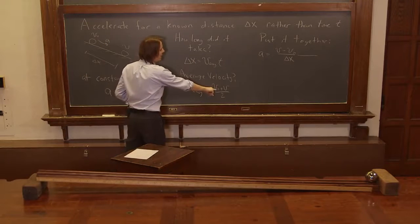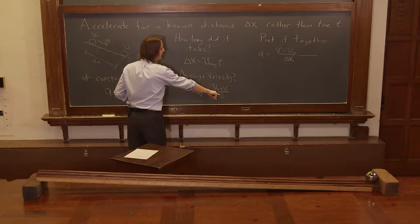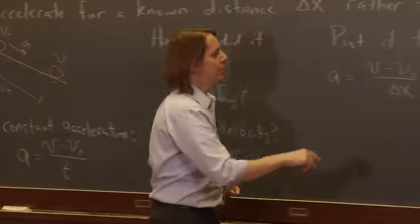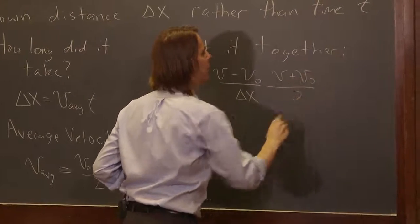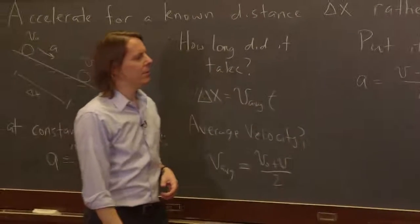And what is v average? It's v plus v-naught over 2. So I'm going to put it in the numerator, v plus v-naught over 2. All that shows up.